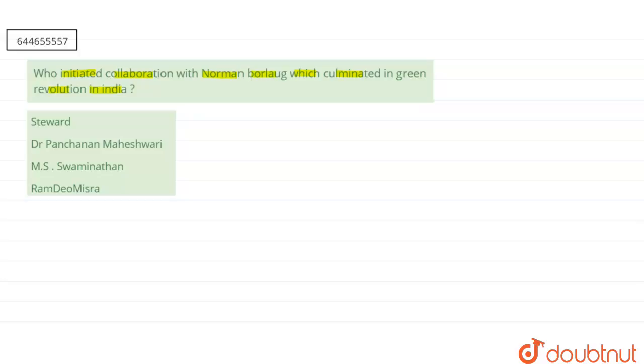Firstly, let's talk about the term Green Revolution. Green Revolution means this is a phase in which there was a tremendous or we can say a huge increase in the food production or in the agriculture.